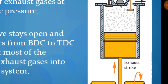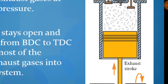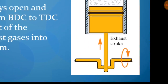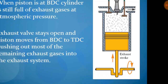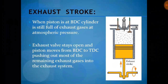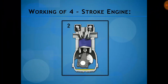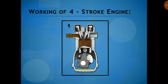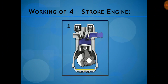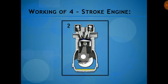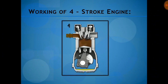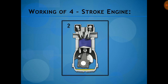The major mechanism used is the conversion of the reciprocating motion of the piston into the rotary motion of the crankshaft. The working cycle is: fuel is intake, compressed, combustion starts, and then the gases get exhausted.